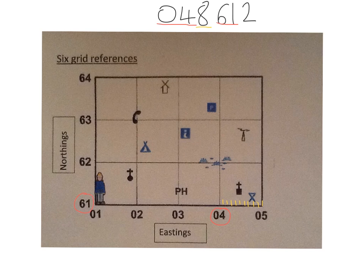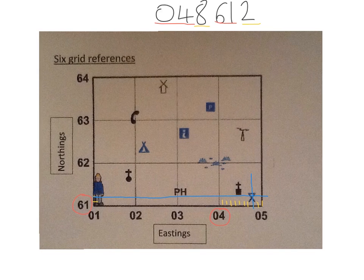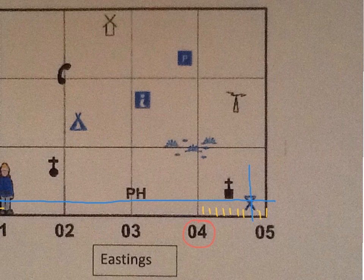The next part of our clue is to find the northings. We're going to be looking at line 61. And this time we only need to go 2 tenths up: 1, 2. Now the trick here is to see where these two lines meet. So 04 and 8 is here. And 61 and 2 is here. So where our two lines cross we have this symbol here which is a picnic site. And that's how you read a six-figure grid reference.